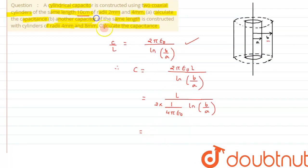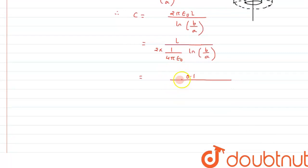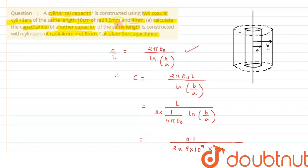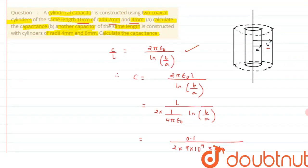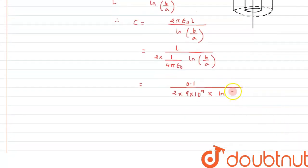Length has been given as 10 centimeters, so we will write it as 0.1 meter divided by 2 into this value 9 into 10 raised to 9, into ln of B by A. The outer radius is given as 4 mm, inner is 2 mm, so the ratio will come out to be 2 only.